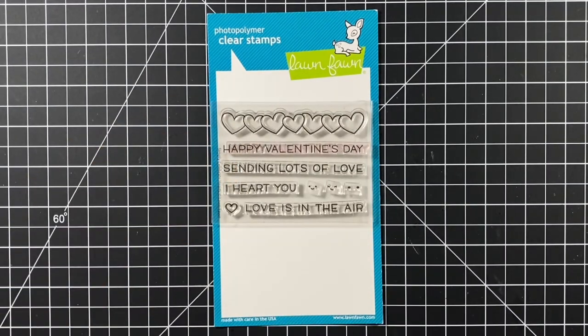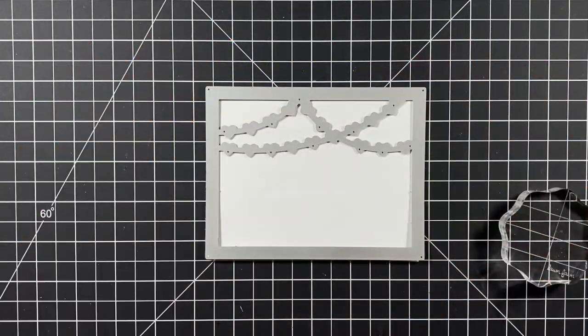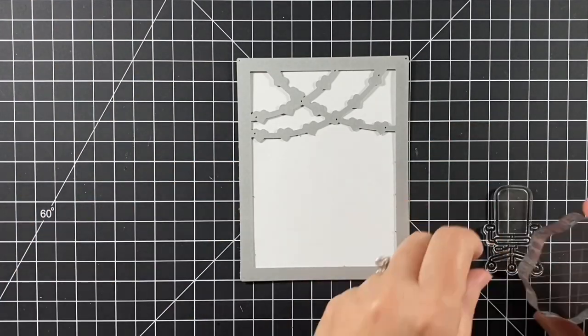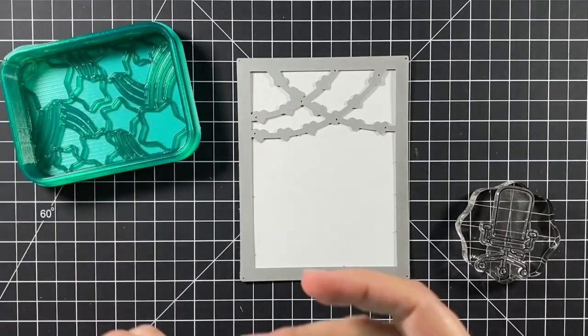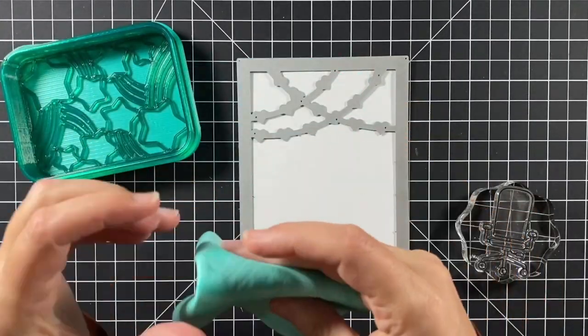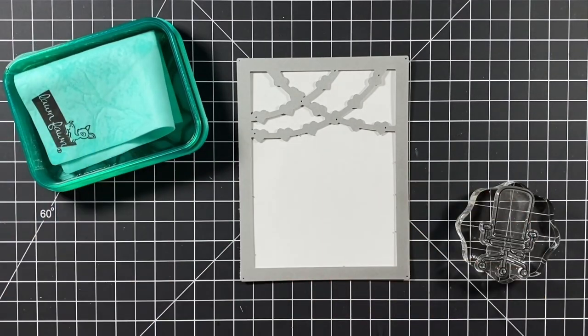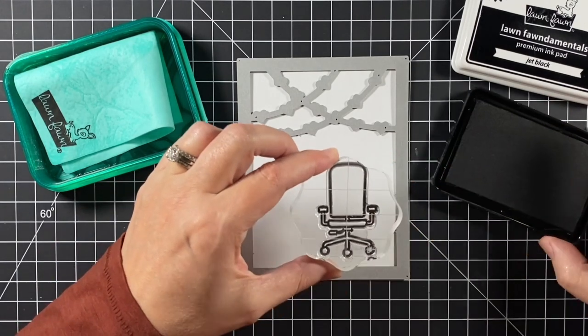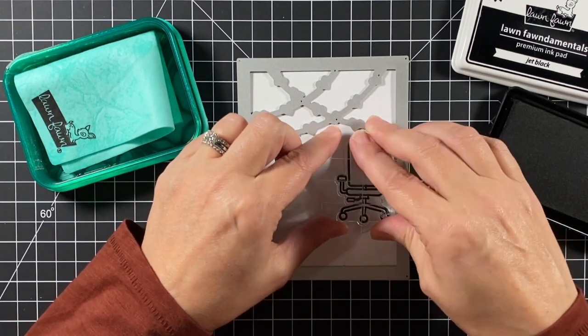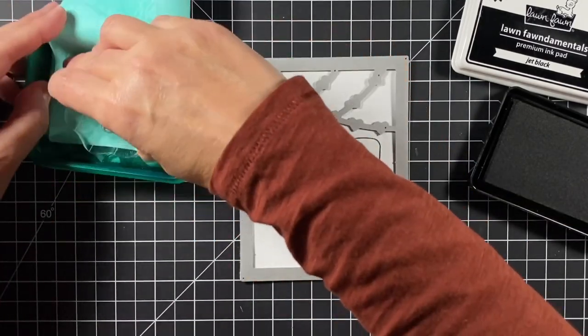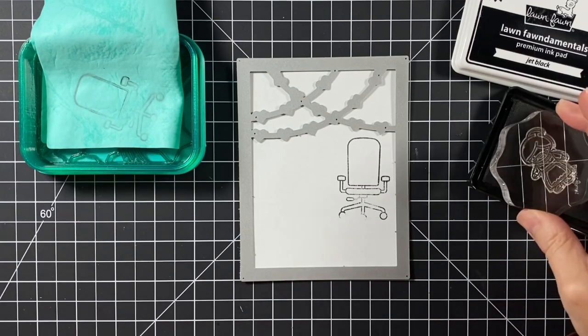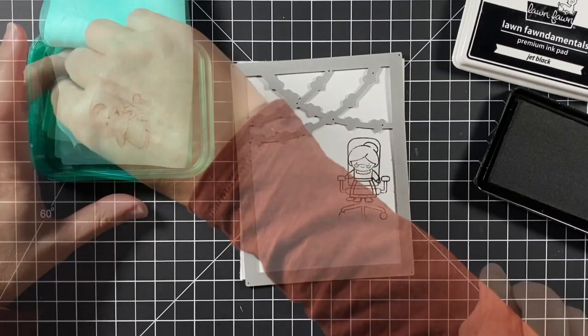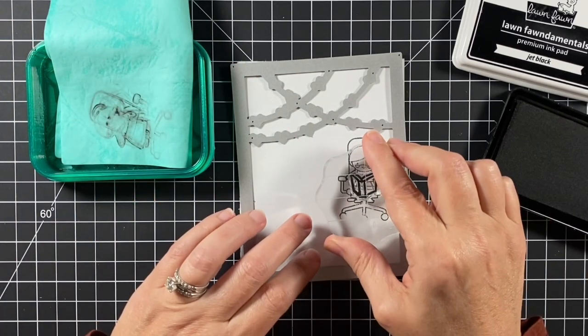You could create the scene in landscape position or portrait, and portrait's what I'm going to use today. I have a scratch piece of typing paper and I'm stamping all the different images that I want in the scene.